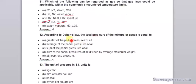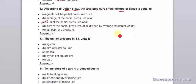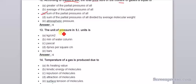According to Dalton's law, the total pressure of the mixture of gases is equal to sum of the partial pressures of all. The unit of pressure in SI unit is Pascal.